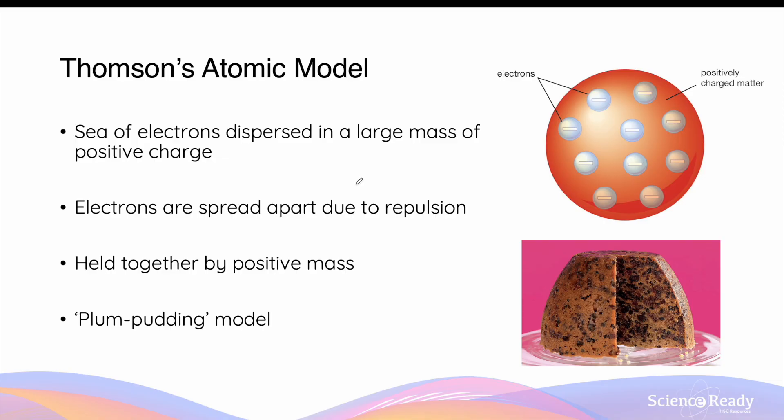Before we go through Geiger and Marsden's experiments, it is useful to understand Thomson's atomic model, as this was our understanding of the atom prior to the development of Rutherford's atomic model. Thomson's atomic model was primarily based on his determination of the cathode rays charge to mass ratio and the subsequent discovery of the electron.